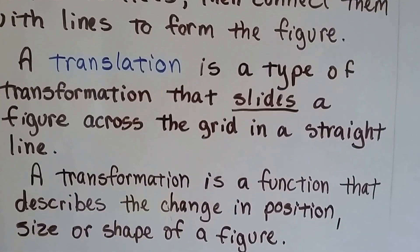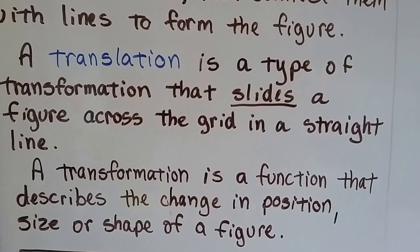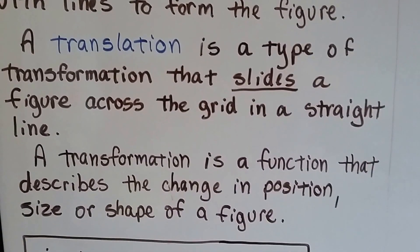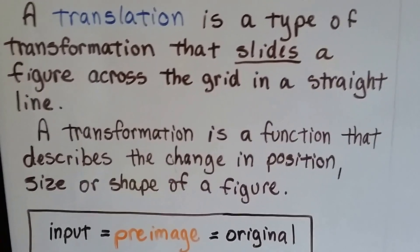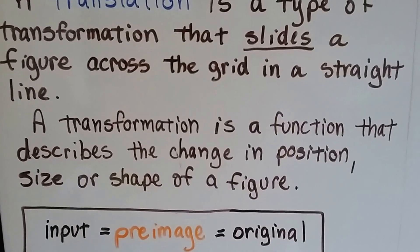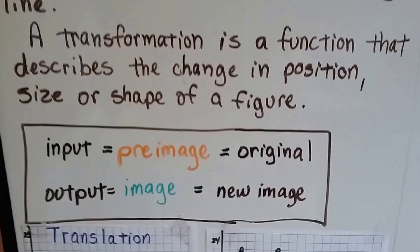A translation is a type of transformation that slides a figure across the grid in a straight line. A transformation is a function that describes the change in position, size, or shape of a figure.